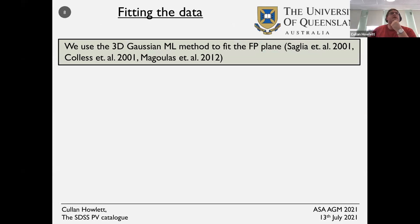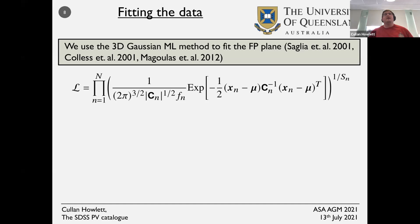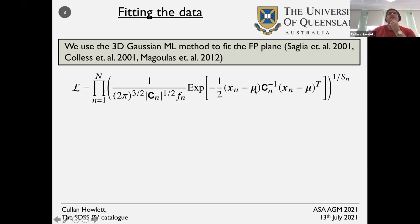The method we use to fit the fundamental plane is a maximum likelihood method which assumes the fundamental plane is drawn from a 3D Gaussian. This method has a long history dating back about 20 years to early ENEAR and EFAR surveys and was also used for the 6dF peculiar velocity sample. It allows us to write down a vector of fundamental plane measurements — mu containing the surface brightness, effective radius, and velocity dispersion of each galaxy — with a covariance matrix encapsulating both intrinsic scatter and measurement errors on each of the three quantities.